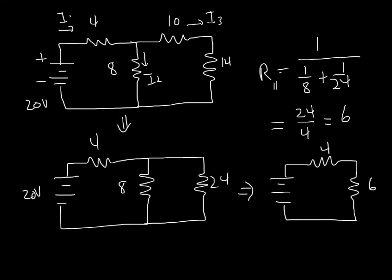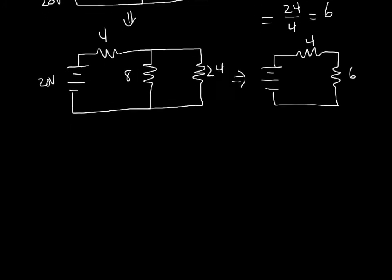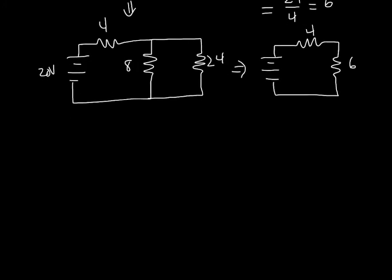Now let's simplify the 4 and the 6 and make those into a 10. So what I have now is my 20 volts and a simple 10 ohm resistance. So this is 10, this is 20.